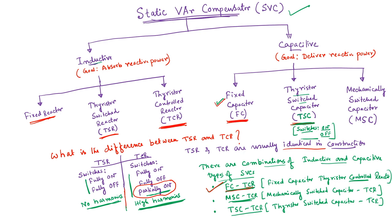To alleviate that, we need switchable capacitors. As we have seen, there are two types of switchable capacitor: one is mechanically switched capacitor, another is thyristor switched capacitor. When we have a mechanically switched capacitor coupled with this TCR — thyristor controlled reactor — the unit is called MSC-TCR, that is mechanically switched capacitor thyristor controlled reactor. Let me discuss briefly what it actually is.